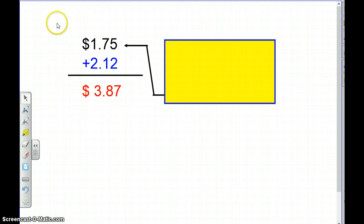We're going to look at another problem right here. So we have $1.75 plus $2.12. This is a very simple addition. So we know that 5 plus 2 is 7, 7 plus 1 is 8, 1 plus 2 is 3. Well, I want to check and make sure that $3.87 is the correct answer.